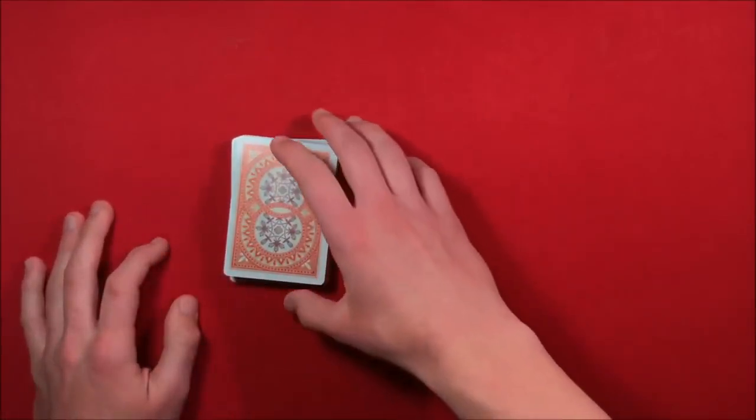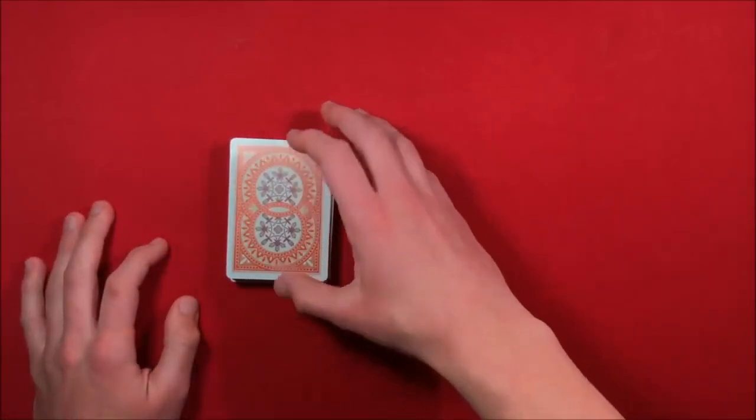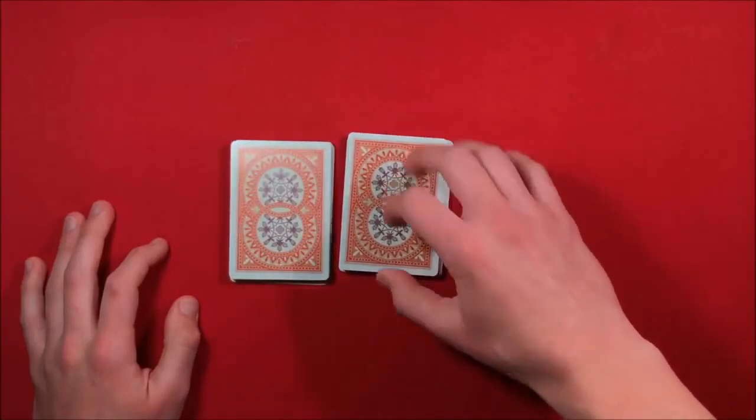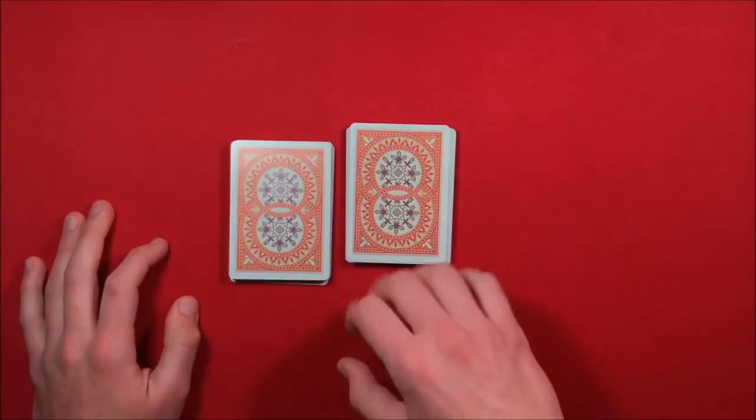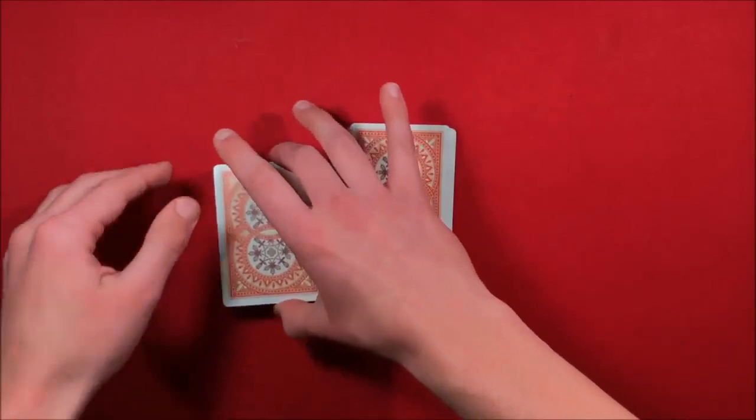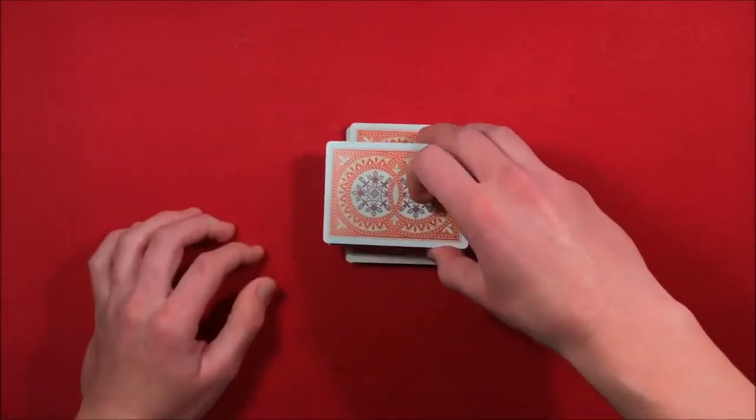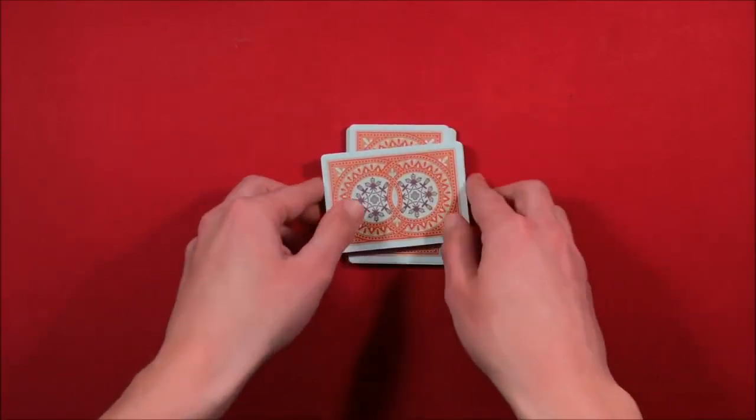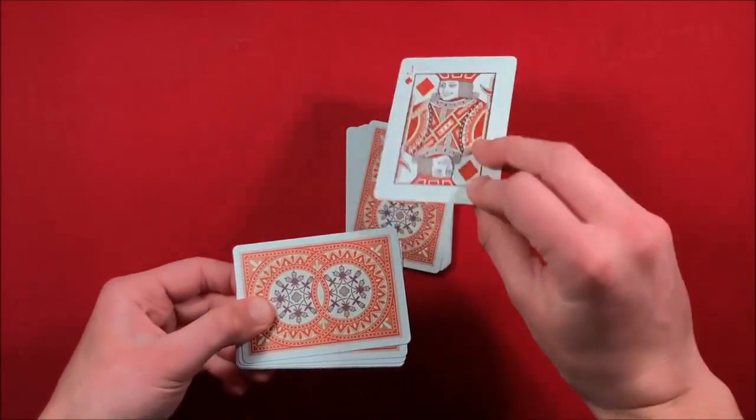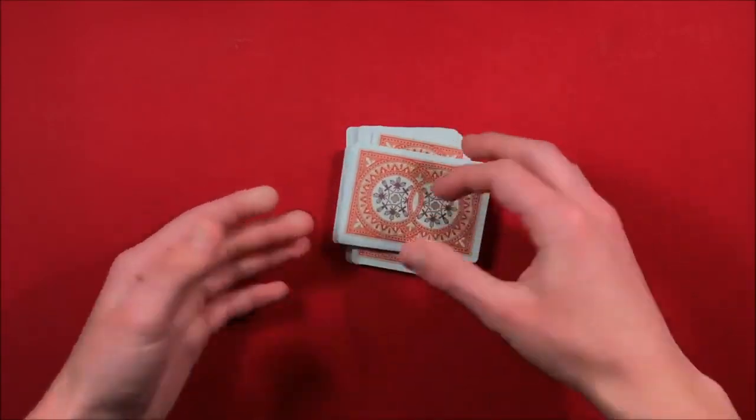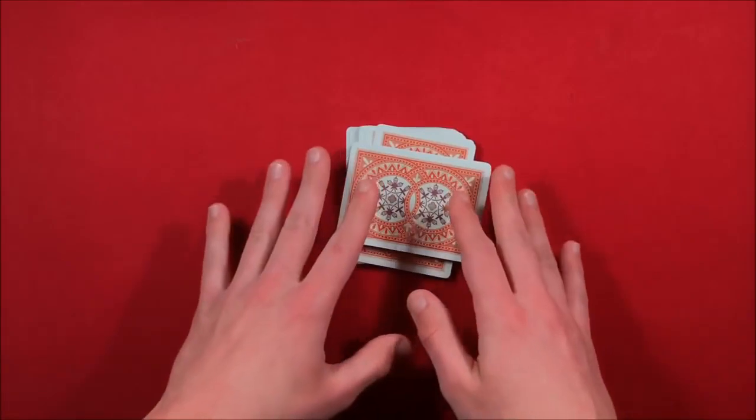You move the card pack over to the right or whatever the spectator does. You take the bottom half of the packet and you tilt it, and you put it on top of the other packet, and the top card is going to be right there. So that's kind of how the trick works.